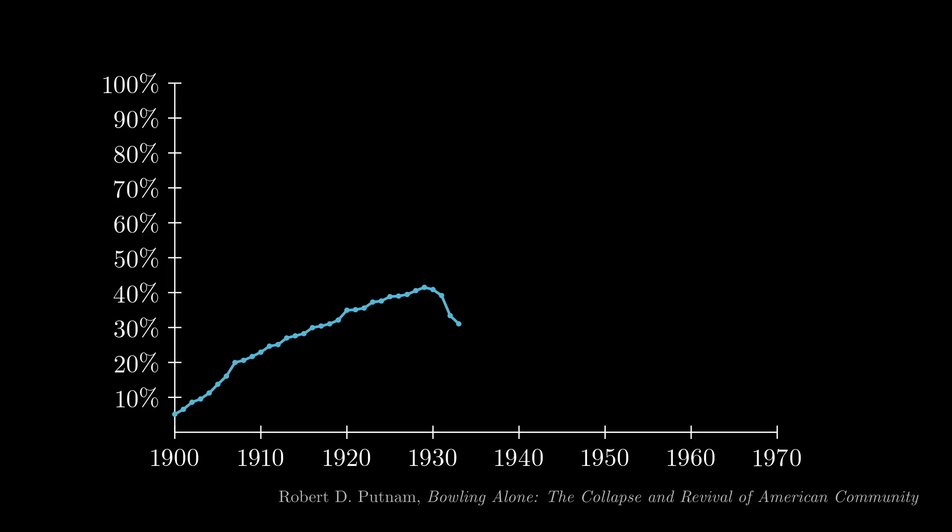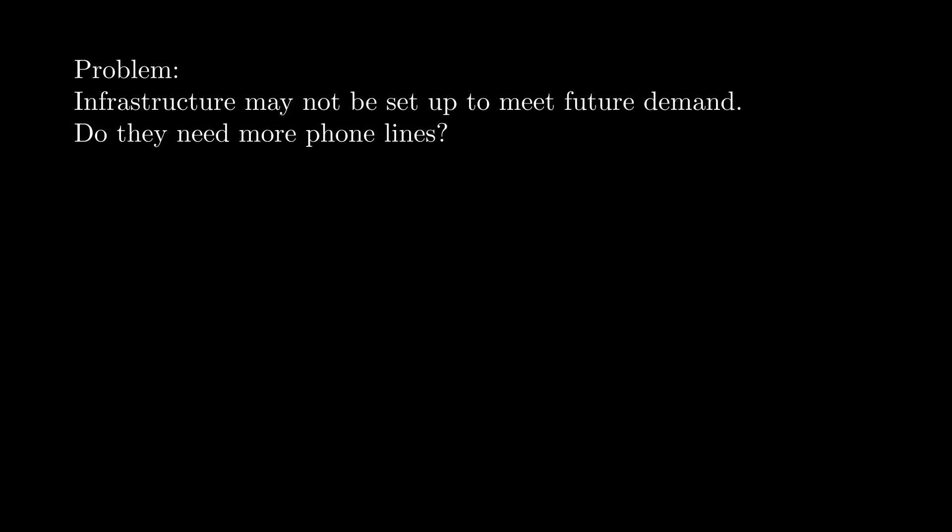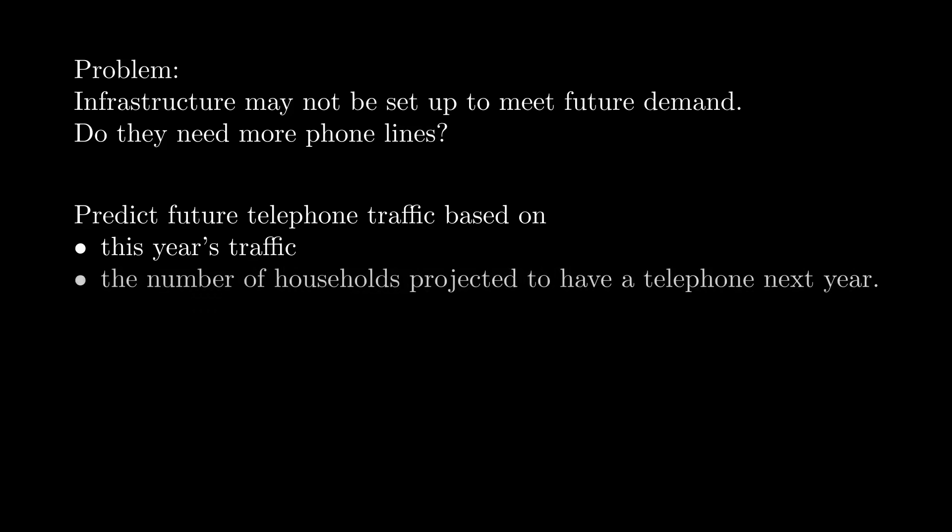It's the mid-1930s. The worst of the Great Depression is over. And as the economy recovers, more and more U.S. households can afford the high-tech device that's transforming how the world communicates: the telephone. From 1933 on, the percentage of households in the U.S. with a telephone goes up every year. It'll reach 90% by 1970. And with rapid adoption in the 1930s, telephone companies have a problem. Their infrastructure may not be set up to meet future demand. Do they need more phone lines to handle next year's call volume, or do they have enough already? To answer this question, they need to predict future telephone traffic based on this year's traffic and on the number of households projected to have a telephone next year.